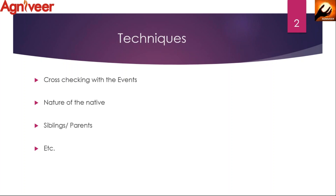So for birth time rectification, first try to analyze using life events. Whenever an event has occurred in the native's life, try to understand when the shift happened, and somewhere around that period the Dasha must have also changed. This is the first clue that you will get.